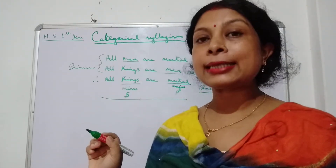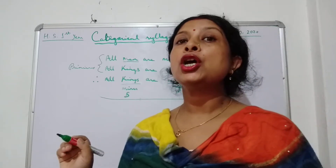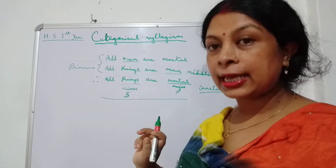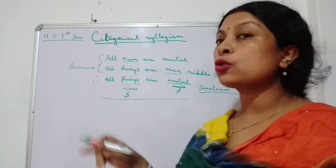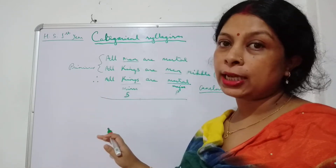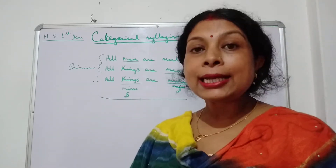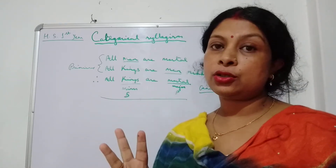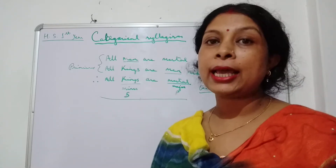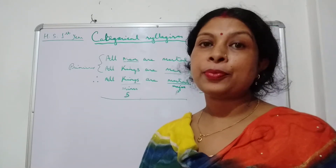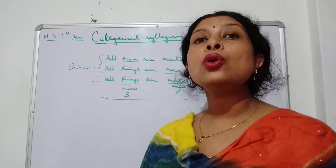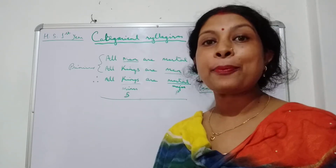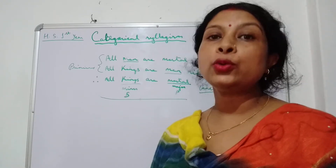A Syllogism is a kind of Mediate Deductive Inference in which we draw the conclusion from two premises taken jointly. The first two propositions are known as the premises. In a Syllogism, there must be only three propositions. The last one, which we derive from the premises, is the conclusion.